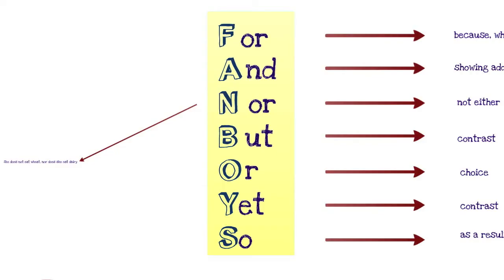These words, or coordinating conjunctions, are one example of what you can use to write a proper compound sentence.